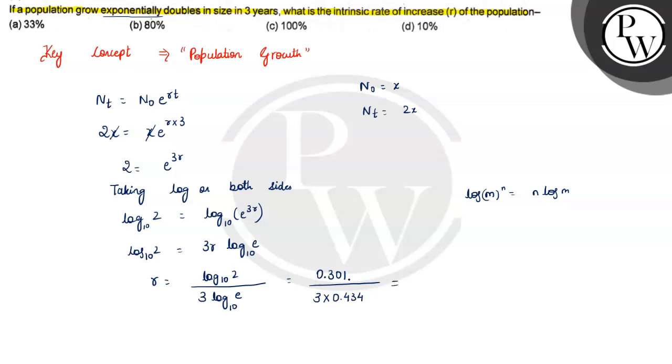So if we calculate this, our answer is 0.2311. What is the intrinsic rate of natural increase? 0.2311.